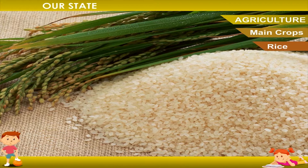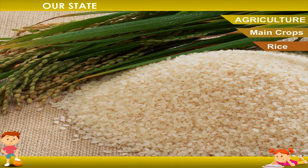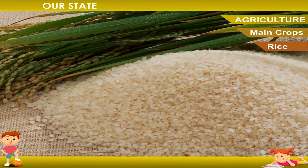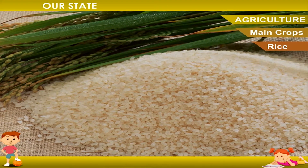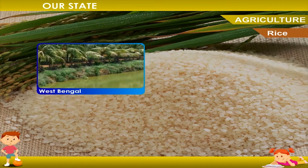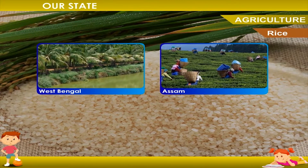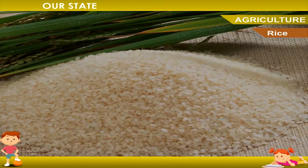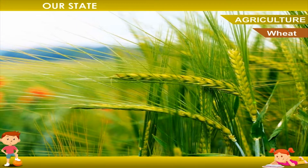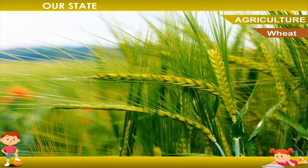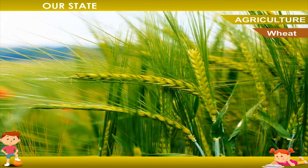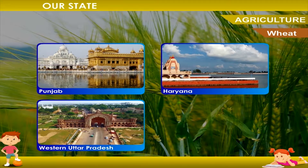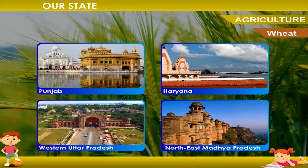Rice is the staple food of most Indians. It is grown in hot and wet areas. The main producers of rice are West Bengal, Assam, Odisha, Andhra Pradesh, and the coastal regions of India. Wheat is the main food of North Indians and is generally produced in Punjab, Haryana, western Uttar Pradesh, and northeast Madhya Pradesh.